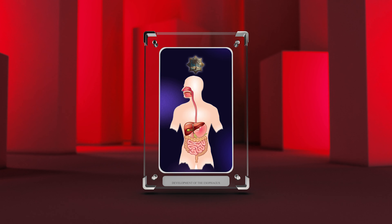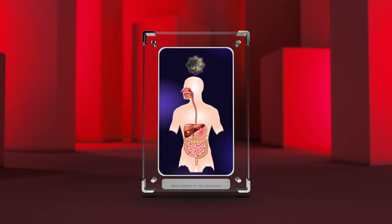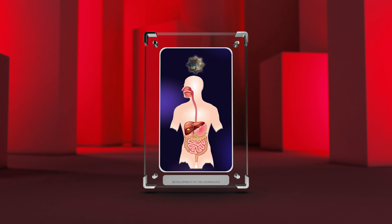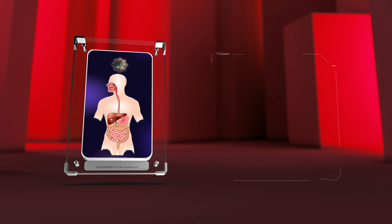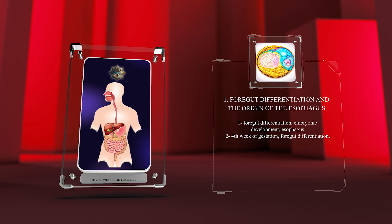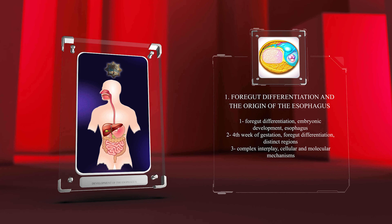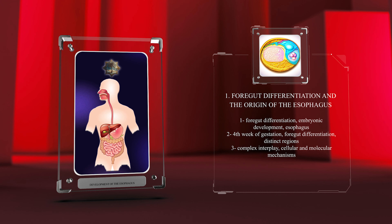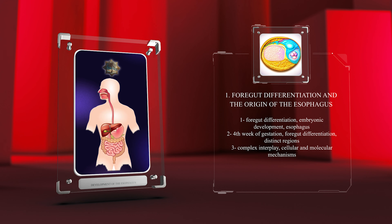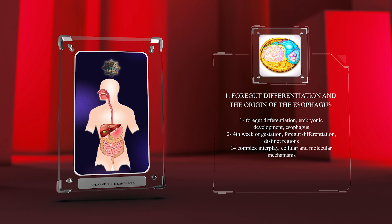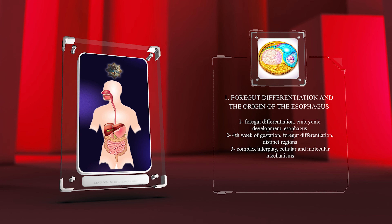Its development involves a series of highly coordinated cellular and molecular events that ensure the proper formation and function of this vital organ. The process of foregut differentiation and the subsequent formation of the esophagus are essential steps in embryonic development. During the fourth week of gestation, the foregut begins to differentiate into distinct regions, including the esophagus. This differentiation is initiated by a complex interplay of specific cellular and molecular mechanisms.